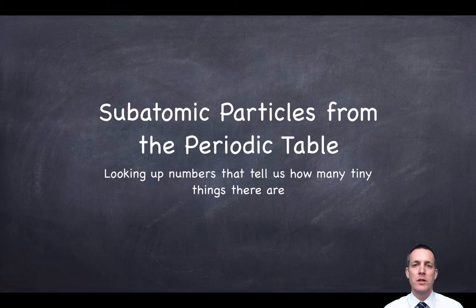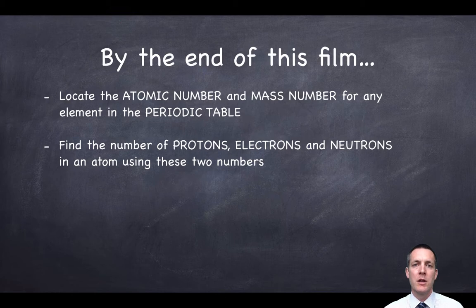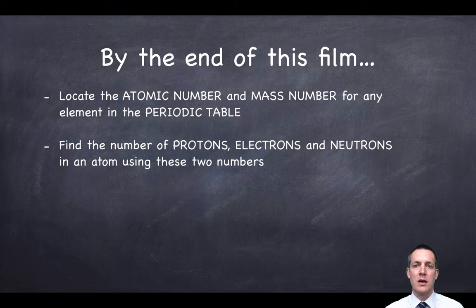Hello and welcome to this film which is all about subatomic particles. This time we're going to try and link what we know about them to some information in the periodic table. By the end of this film you'll be able to find two really important numbers for any element: the mass number and the atomic number. Once you find those two numbers you'll be able to decide how many protons, neutrons, and electrons are in an atom.